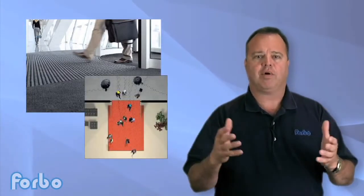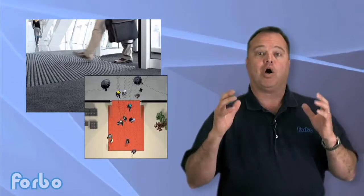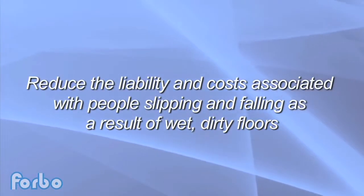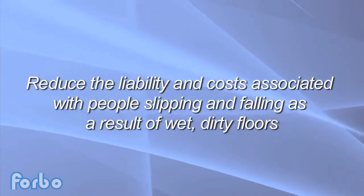Simply put, one of the most overlooked factors is that many buildings do not have effective entrance systems. Forbo's Coral and New Way entrance flooring can reduce 90% of the debris and soil that comes into a building and can ultimately minimize the care and maintenance that needs to be done inside the building. Appropriate entrance systems can also reduce the liability and cost associated with people slipping and falling as a result of wet, dirty floors, particularly during inclement weather or with excessive amounts of dirt and grit buildup.